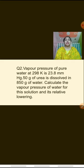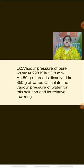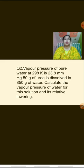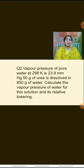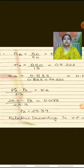The second question is now displayed on the screen. The vapor pressure of pure water at 298 Kelvin is 23.8 mm Hg — that means P⁰_A is given. It has been told that 50 grams of urea is dissolved in 850 grams of water, so W_A and W_B are also given. You have to calculate the vapor pressure of water for this solution and its relative lowering — that means P_A is what you need to calculate.